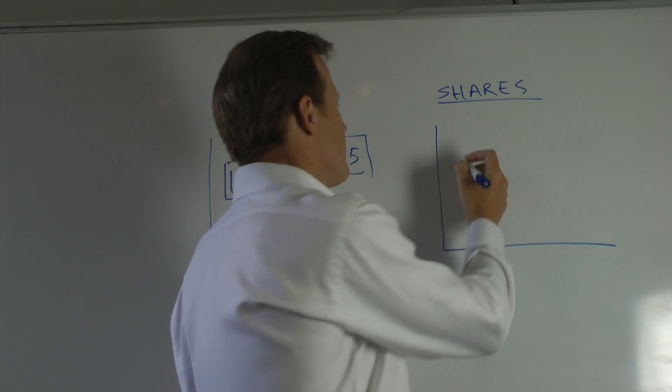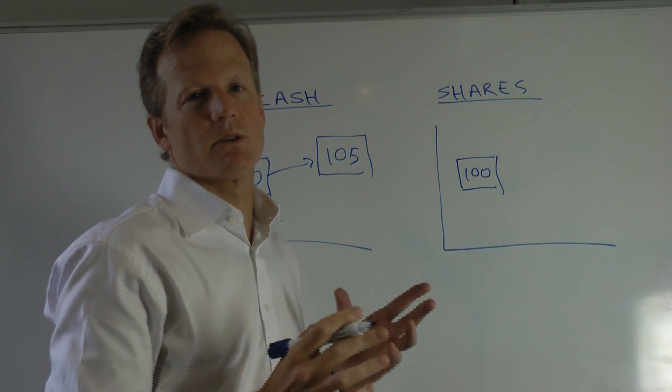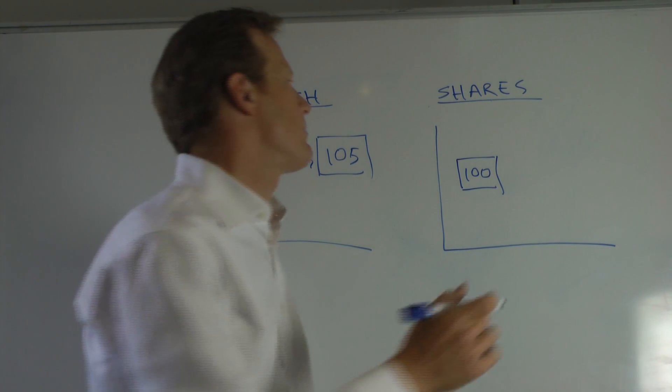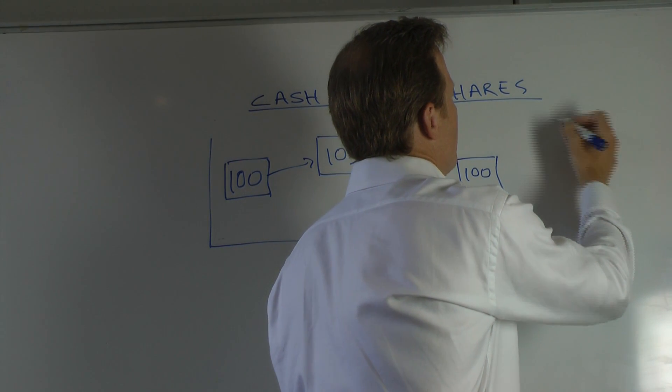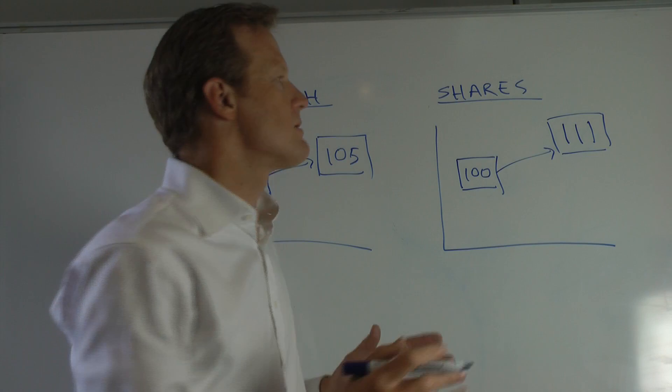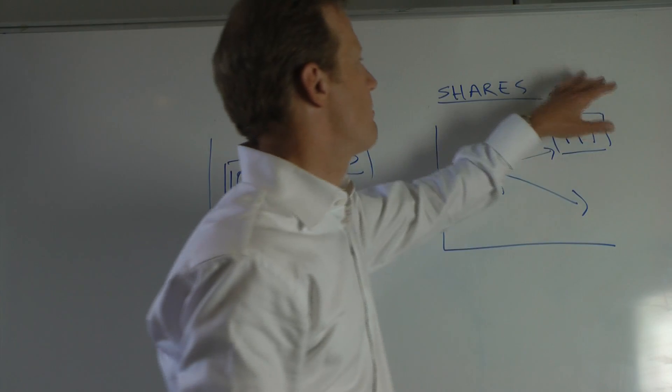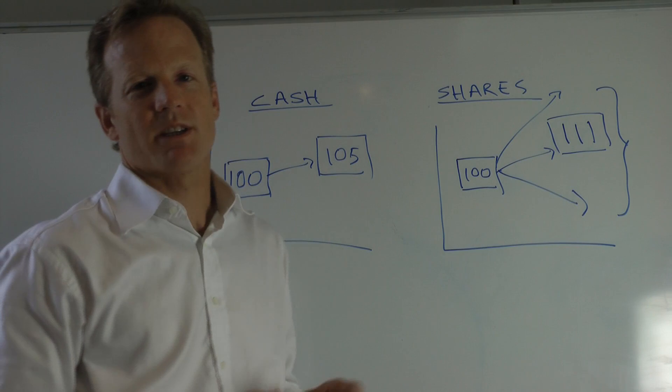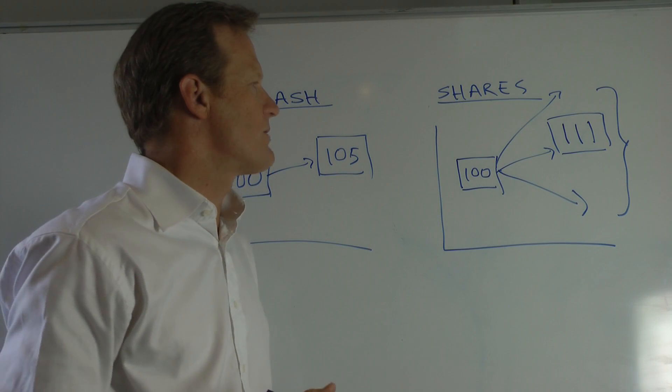In the case of equities there's a lot more uncertainty. If we start with $100 we expect probably to do a bit better than cash and on average the Australian equity market has delivered around 11% per annum. So we might expect over the course of the year to end up with $111 from an equity investment. Problem of course is that we may do much better or much worse. The range of outcomes is potentially very wide from a very good outcome to a very bad outcome and that dispersion of outcomes reflects the volatility or the risk of investing in shares.